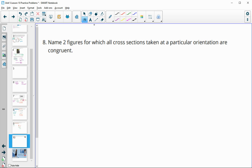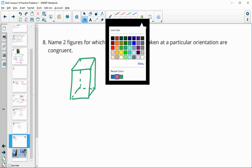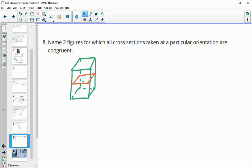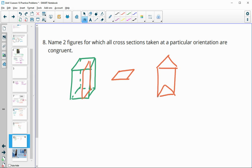Number 8, name two figures for which all cross sections taken at a particular orientation are congruent. We would want to make sure that this isn't changing its size at all. We could do any type of prism. If we did like a square or rectangular prism and we said we were going to do the horizontal cross section, it would stay the same all the way up because you'd end up with this. This would be the same cross section from top to bottom. Or even if you did a vertical cross section, this would stay the same vertically all across the shape. So a prism, really any type of prism. You could also do a triangular prism and that would be the same as well.